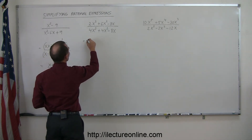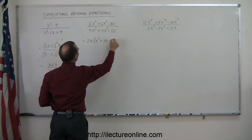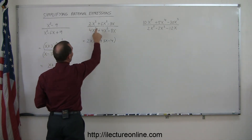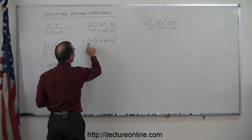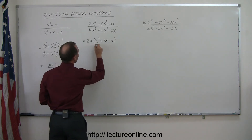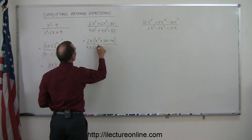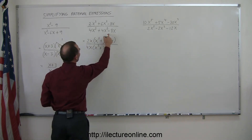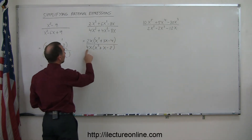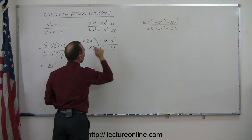So the numerator equals 2x times (x² + 3x − 4). To verify: 2x times x² gives 2x³, 2x times 3x gives 6x², 2x times −4 gives −8x — correct. The denominator factors as 4x times (x² + x − 2). Verifying: 4x times x² gives 4x³, 4x times x gives 4x², 4x times −2 gives −8x — correct.